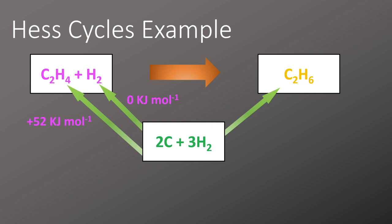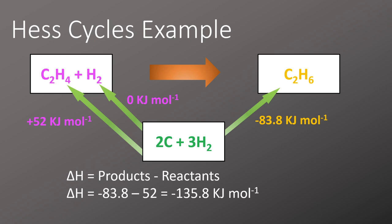We'll then look at this simple calculation of enthalpy change equals products minus reactants. We'll take the sum of the products and we'll minus away the sum of the reactants to leave us with minus 135.8 kilojoules per mole.